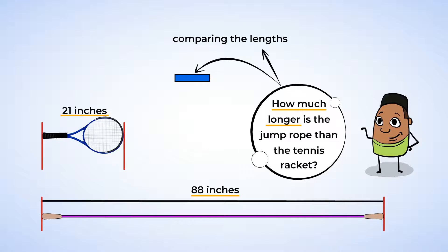We will need to subtract. If we subtract 21 inches from 88 inches, we get 67 inches. The jump rope is 67 inches longer than the tennis racket. That's mighty awesome!